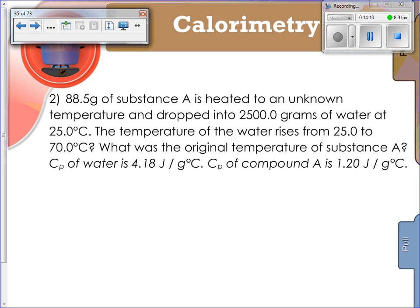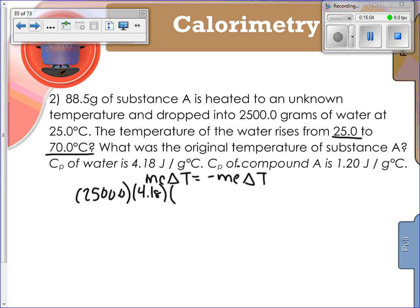Go ahead and pause the video and see if you can figure out number two. Let's go ahead and try it together. You've got q equals negative q, so I've got mc∆T equals negative mc∆T. My substance A is heated to an unknown temperature, then it's dropped into water. You don't know what that initial temperature is, but you do know that it ends up at 70 degrees, and you know the water goes from 25 to 70. So that means my unknown substance lost that heat, so it's going to be on this side of my equation. Let's set it up. I'm going to put my water values over here: 2500.0 times 4.18, and my change in temperature is 70.0 minus 25.0.